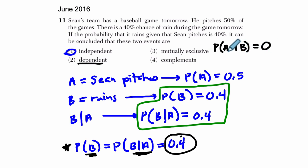if somehow it was impossible for Sean to be pitching and for it to be raining at the same time, that would be a mutually exclusive event. That's not really going to fit this context, so it's not the answer.